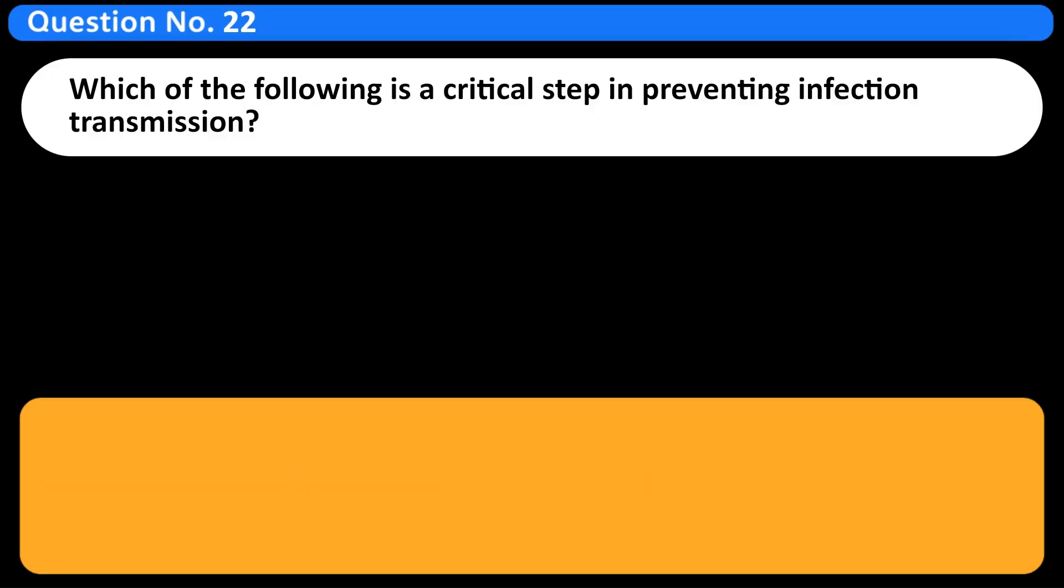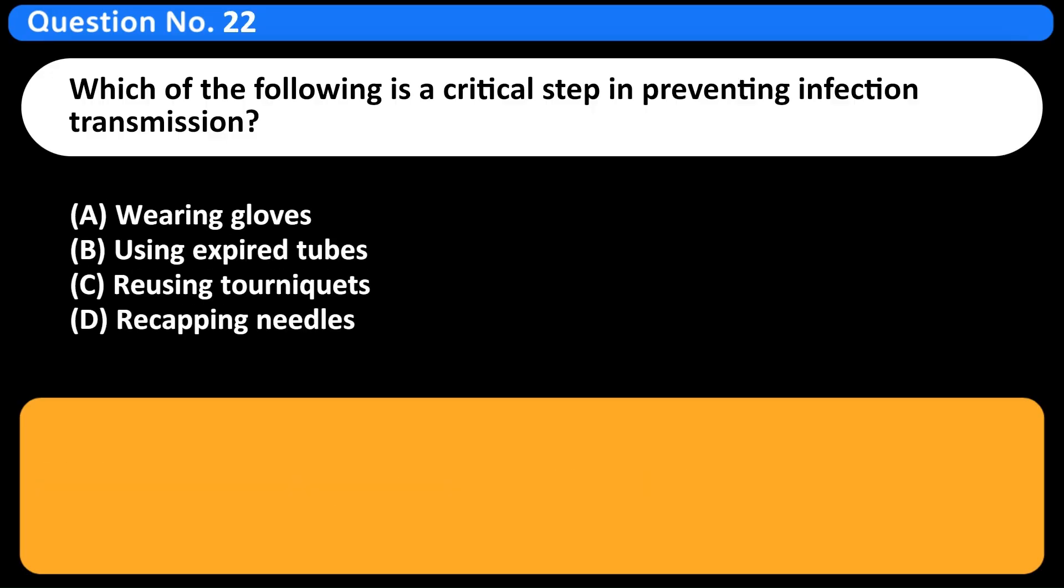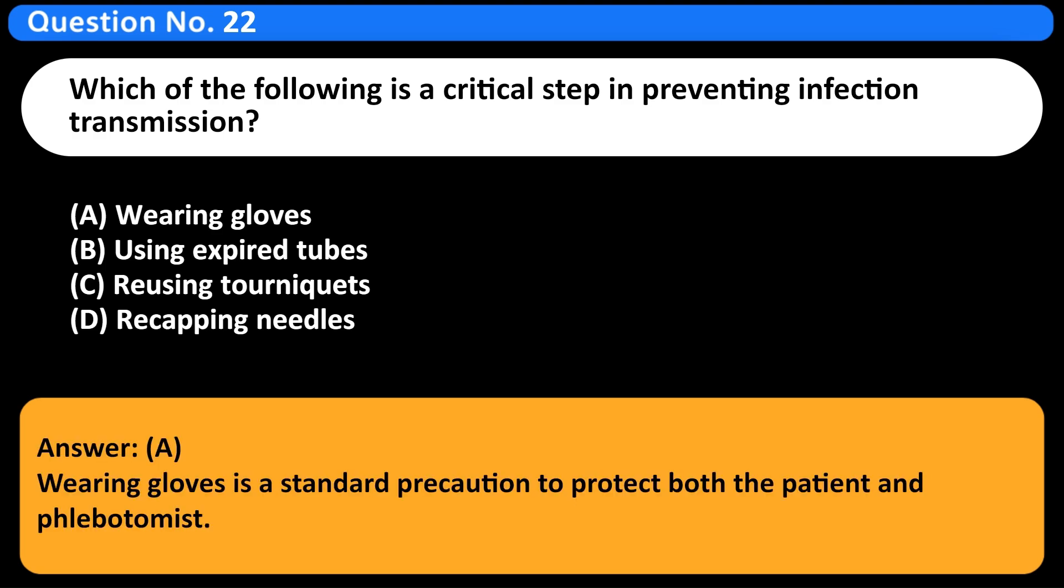Which of the following is a critical step in preventing infection transmission? A. Wearing gloves. Wearing gloves is a standard precaution to protect both the patient and phlebotomist.